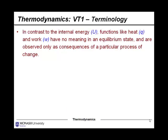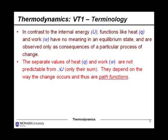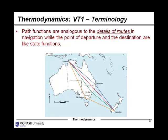This is an example of a state function. In contrast to internal energy, functions like heat — indicated using the symbol Q — and work — which is W — have no meaning in an equilibrium state. They're observed only as consequences of a particular process of change. The separate values of heat and work are not predictable from delta U alone. You could have a process where there are all sorts of different heat and work contributions — some positive, some negative — that add up to give you the overall value for delta U. They depend on the way the changes were occurring, and thus we call these path functions, analogous to the details of the routes in the navigation between Dunedin and Darwin. The point of departure and the destination are like the state functions.